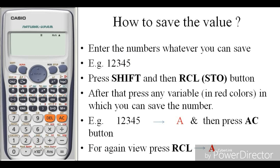you have to press this number - one, two, three, four, and five. You can save any number only in a certain button of the calculator. You can see this red color variable: A, B, C, D, E, F, X, Y, and M. You can save this value in only that button. If I have to save this value in the variable A, then first of all